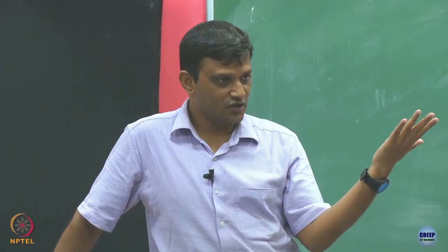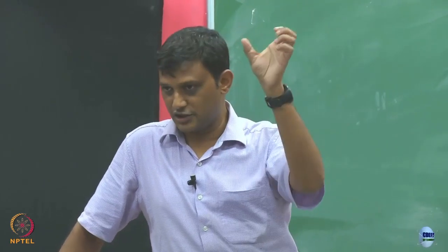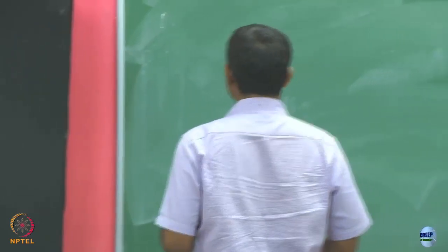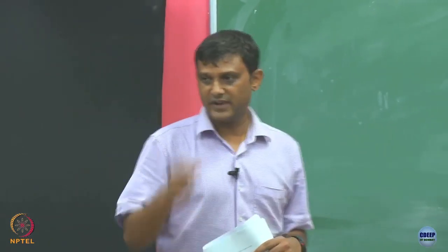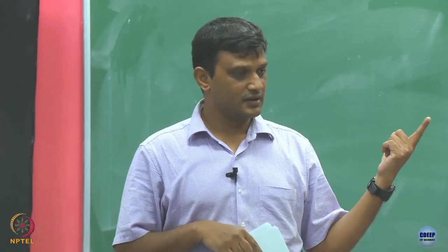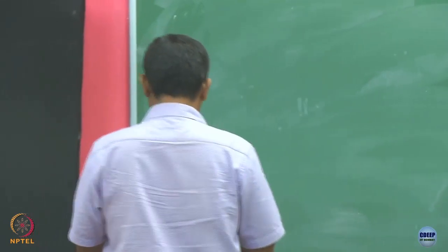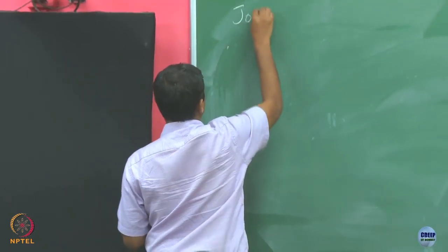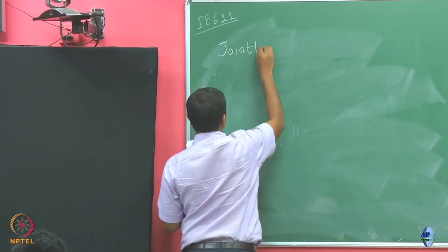It is not necessary that knowing just the individual distributions tells you how the joint one looks. So for any experiment where we have multiple random variables, we need to define the joint distributions. And now we are going to study those jointly distributed random variables.